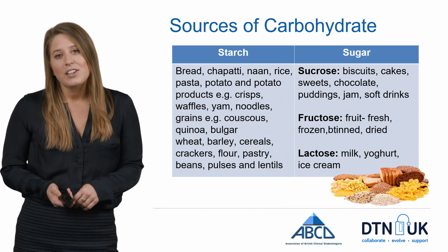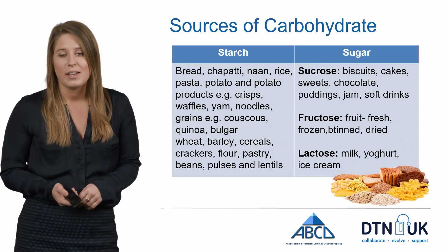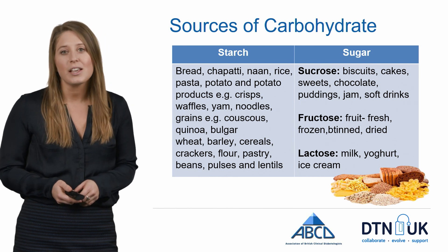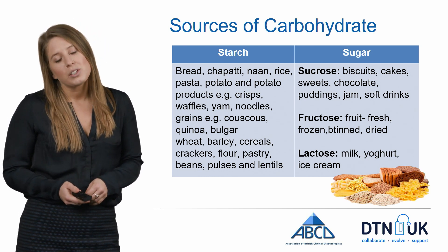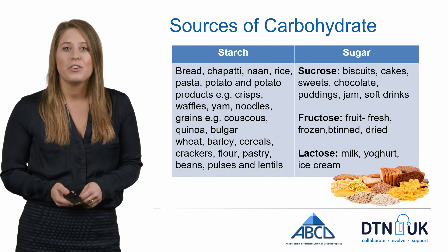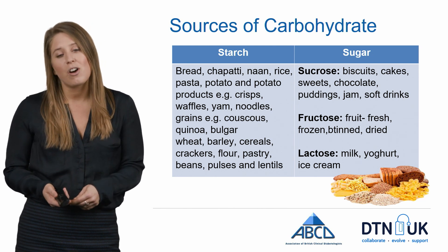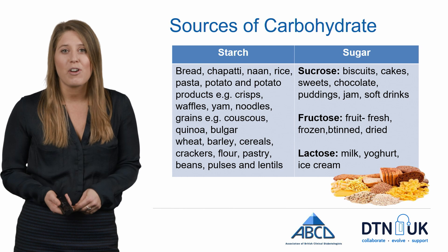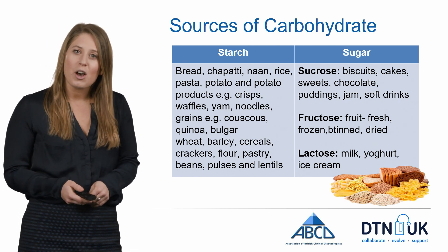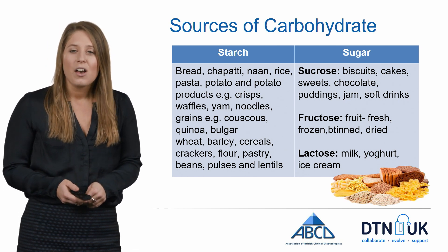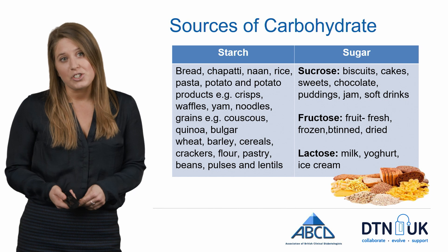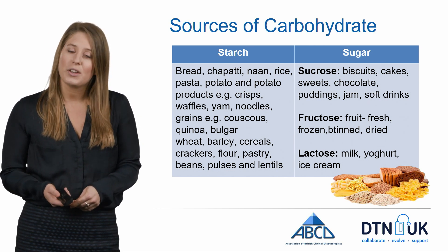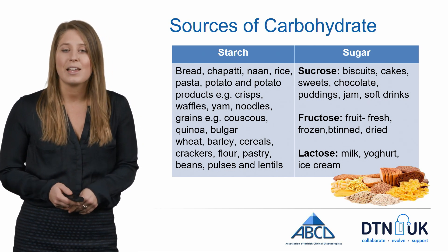Carbohydrates are a main food group in people's diets and they can be split into two groups: starches and sugars. Sources of starchy carbohydrates include foods such as bread, rice, potatoes, pasta, cereals and grains. Sources of sugary carbohydrates come from foods which have added sugars (sucrose), or the natural sugars found in fruit (fructose) or dairy (lactose).